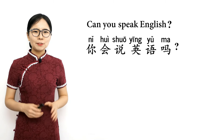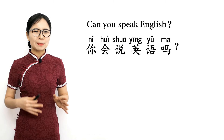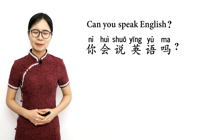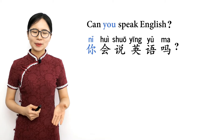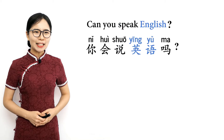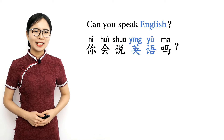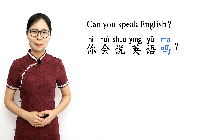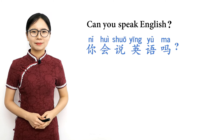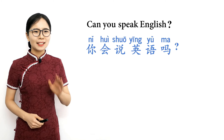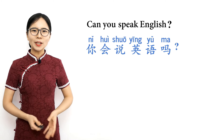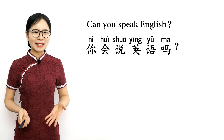If you want to ask if someone can speak English, you can say 你会说英语吗 — can you speak English? 你 means you, 会 means can, 说 means speak, 英语 means English, and 吗 is a yes-no question particle. Please repeat after me: 你会说英语吗？ 你会说英语吗？ 你会说英语吗？ — can you speak English?